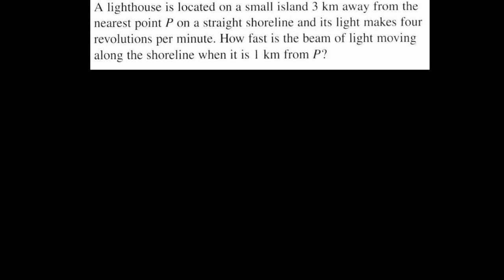So if the lighthouse makes four revolutions per minute, and we know that one revolution in a circle is 360 degrees but also 2π radians, which we're going to want to use because we're using trigonometry and you'll always want to be in radians for that—well, if it does four revolutions in a minute, then it does 8π radians in a minute because each revolution is equal to 2π. So I'm going to write down that dθ/dt is equal to 8π radians per minute.